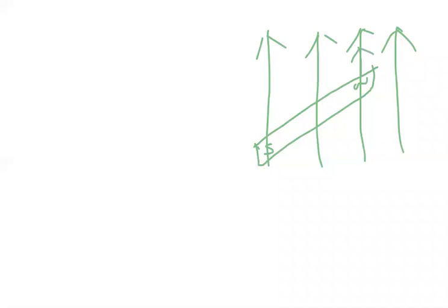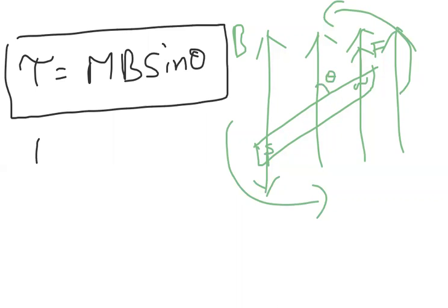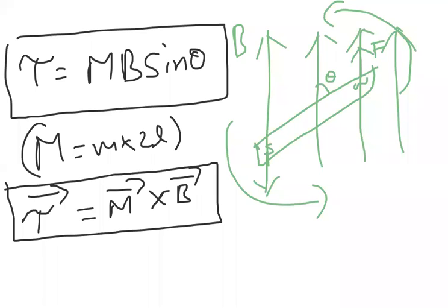To summarize: we placed a magnet in the magnetic field with south pole and north pole. North pole experiences upward force and south pole experiences downward force, tending to rotate the magnet. With angle theta between magnet and field, we derived tau equals MB sin theta. In vector form, since torque is a vector, tau-bar equals M-bar cross B-bar.